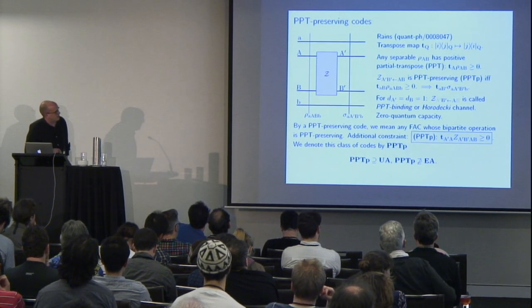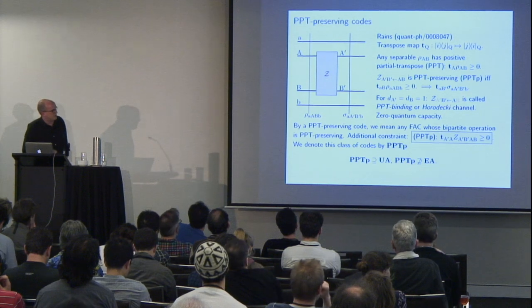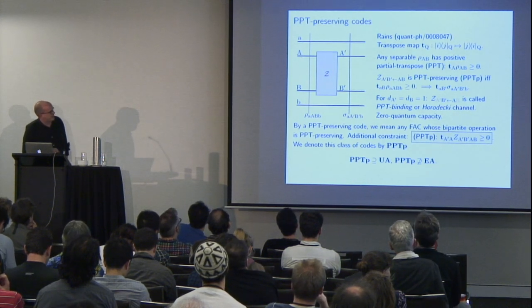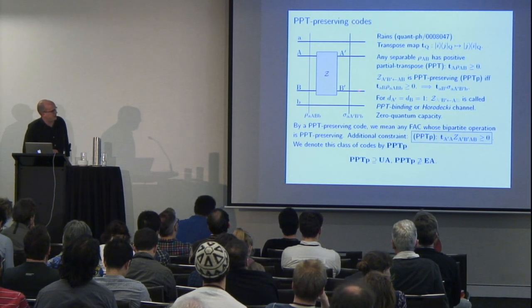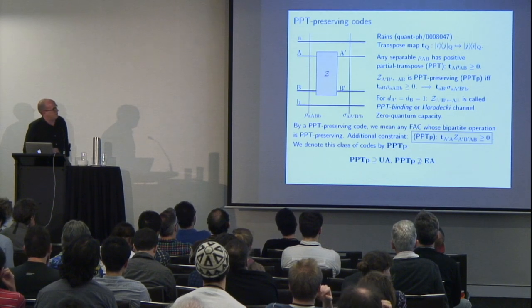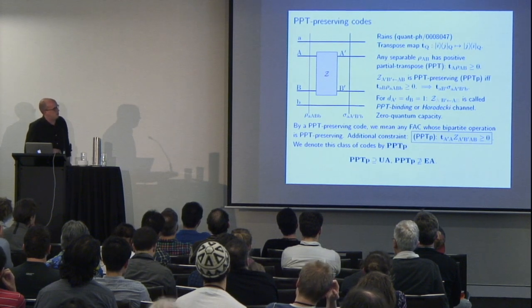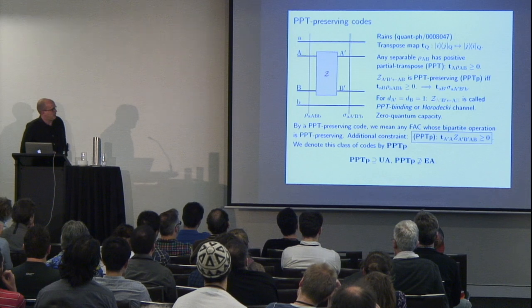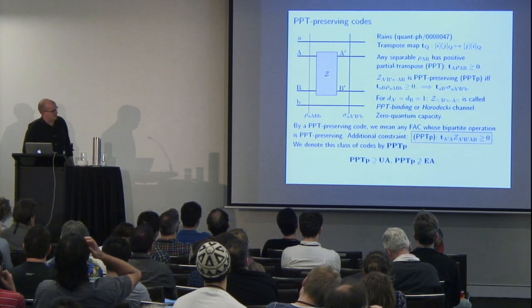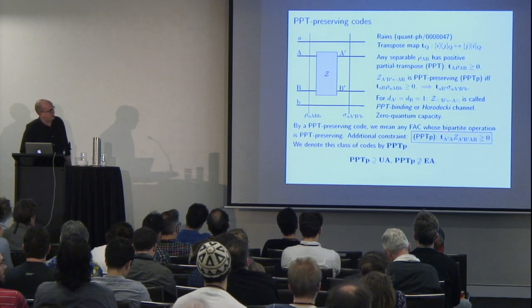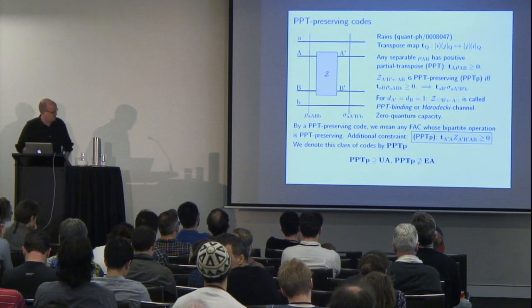These were first studied by Rains in a paper I'll come back to. If we have just a channel from A to B-prime — a trivial one-dimensional system — when this is PPT-preserving we call it a PPT-binding or Horodecki channel, which is well known to have zero quantum capacity. By a PPT-preserving code I mean a forward-assisted code whose bipartite operation is PPT-preserving, corresponding to an additional semi-definite constraint on the Choi matrix, and we denote this class PPTP.